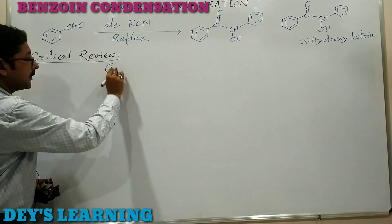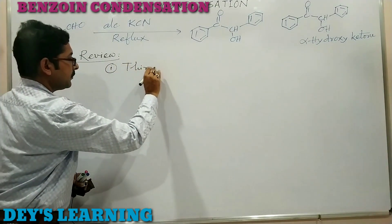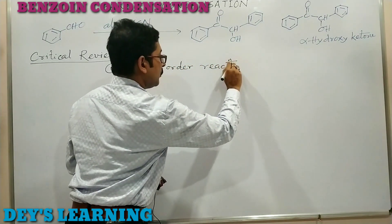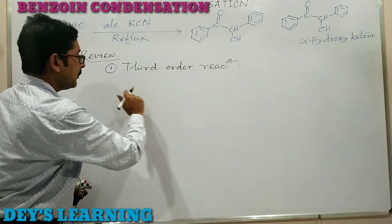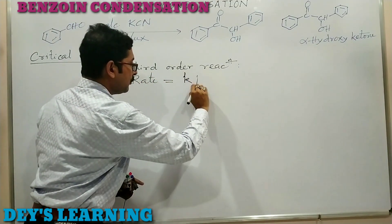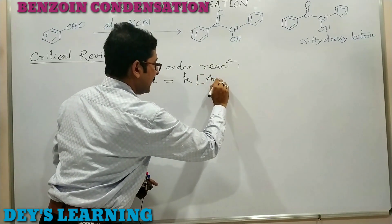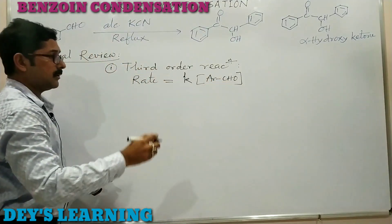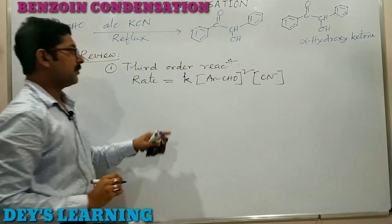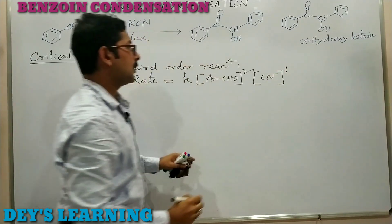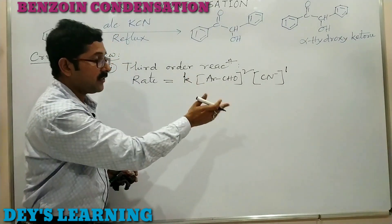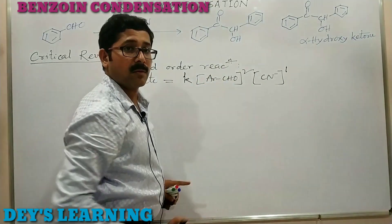In the critical review: number one, the reaction is a third order reaction. We know this from the rate of the reaction: rate = k × [ArCHO]² × [CN⁻]. The step in which one donor molecule donates the electron pair to another aldehyde molecule is the rate-determining step.